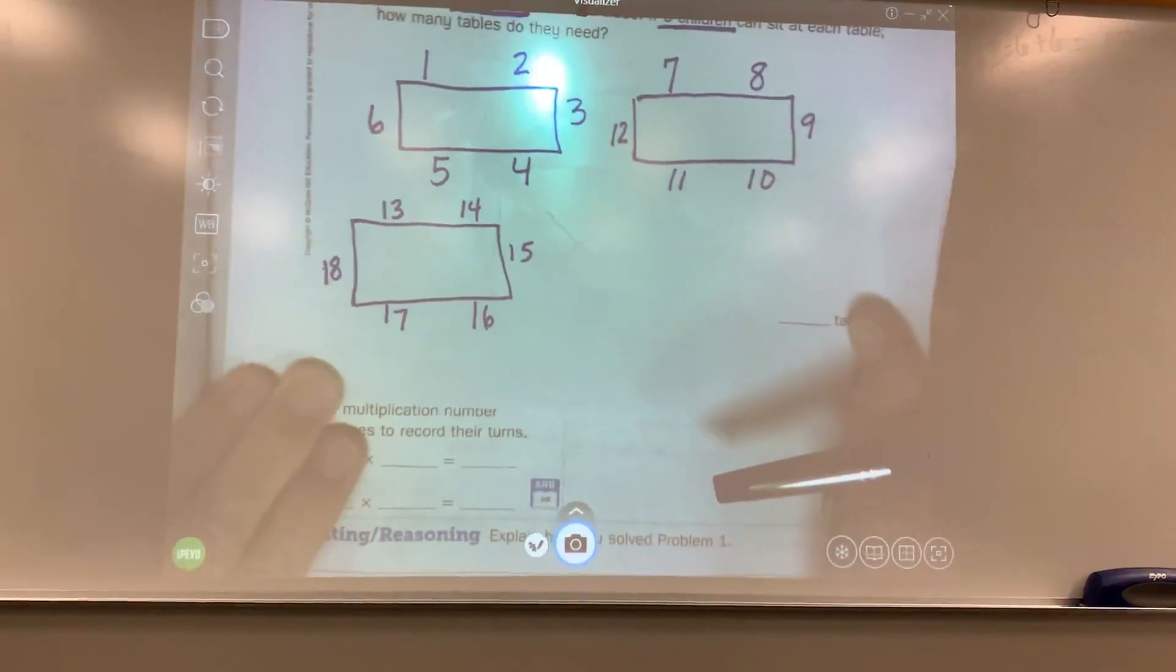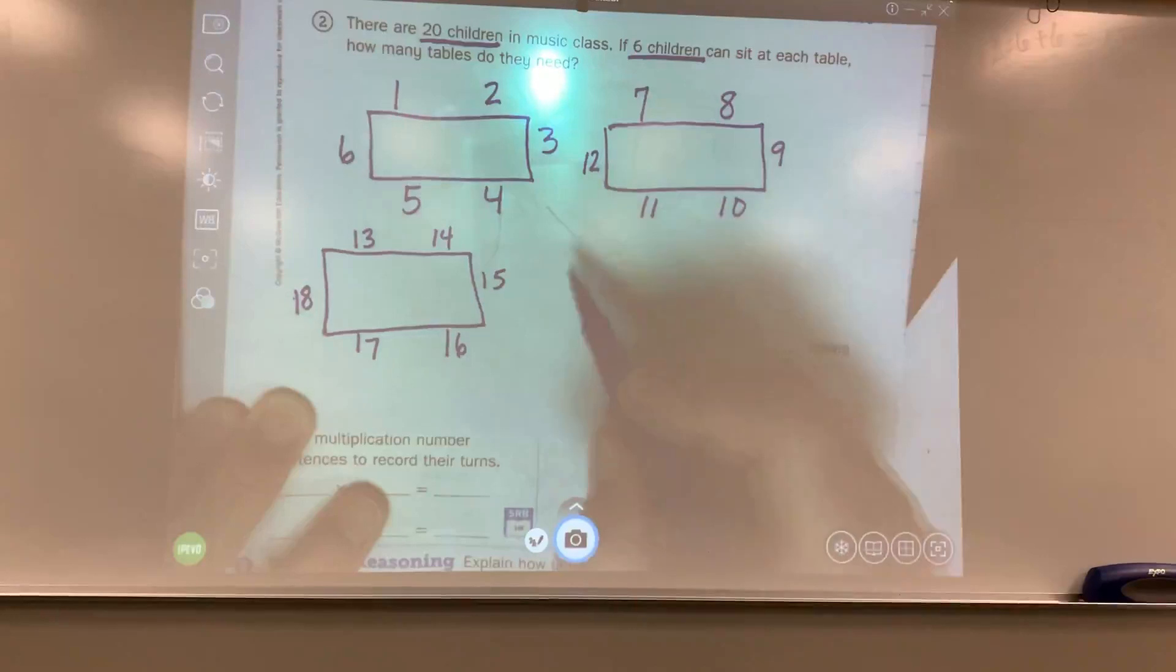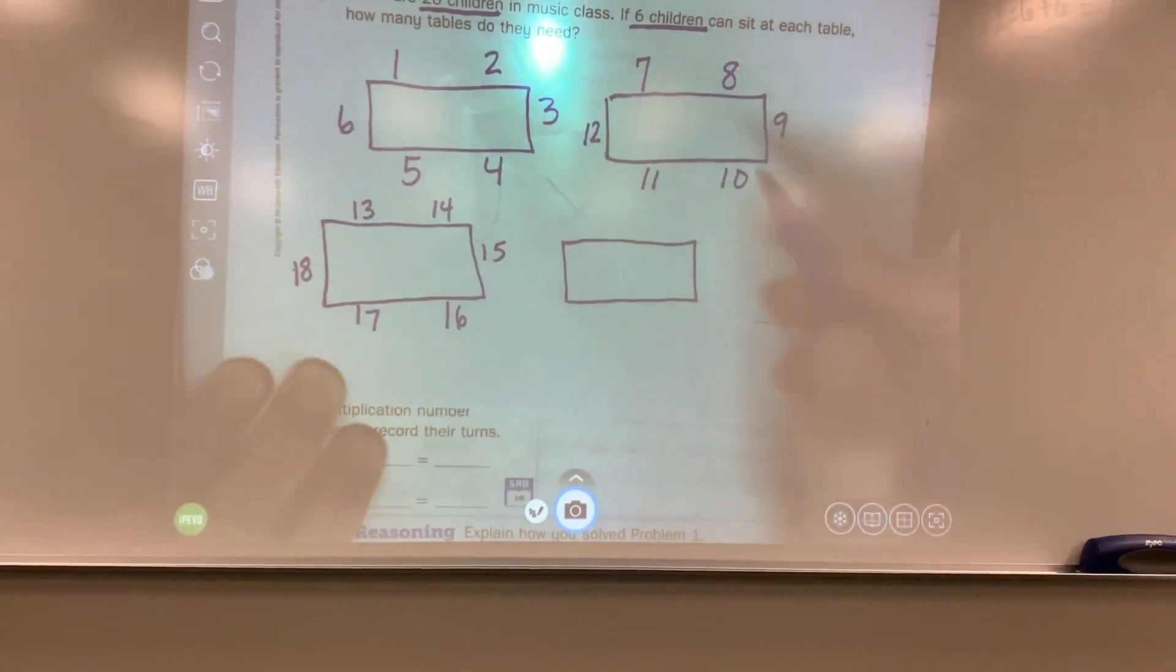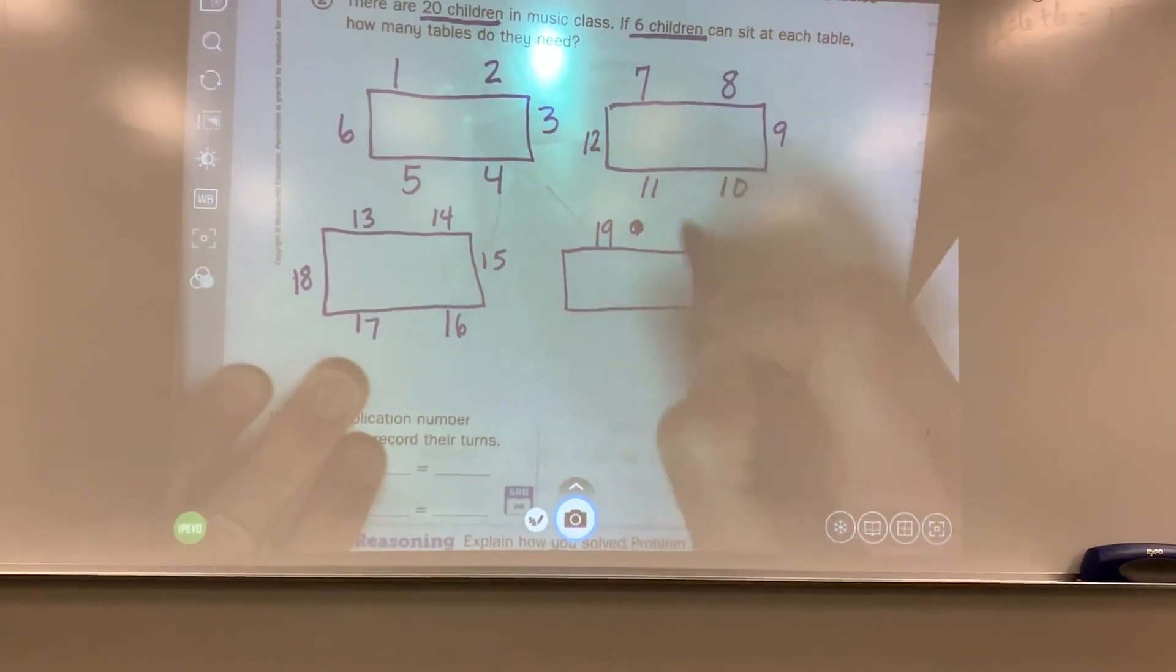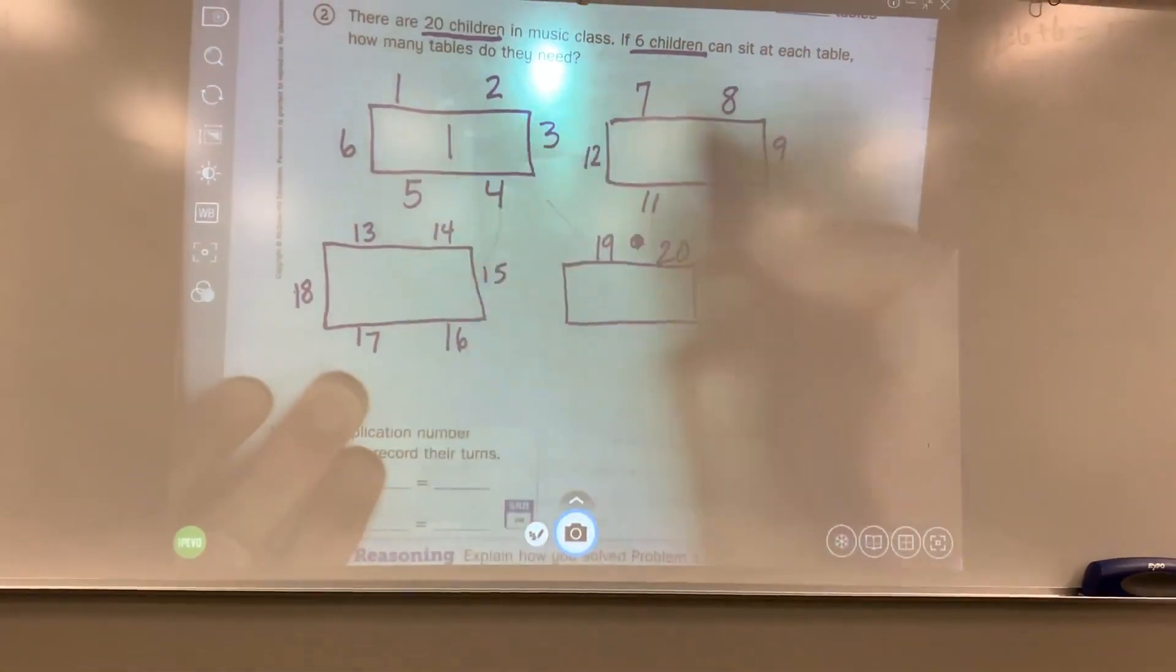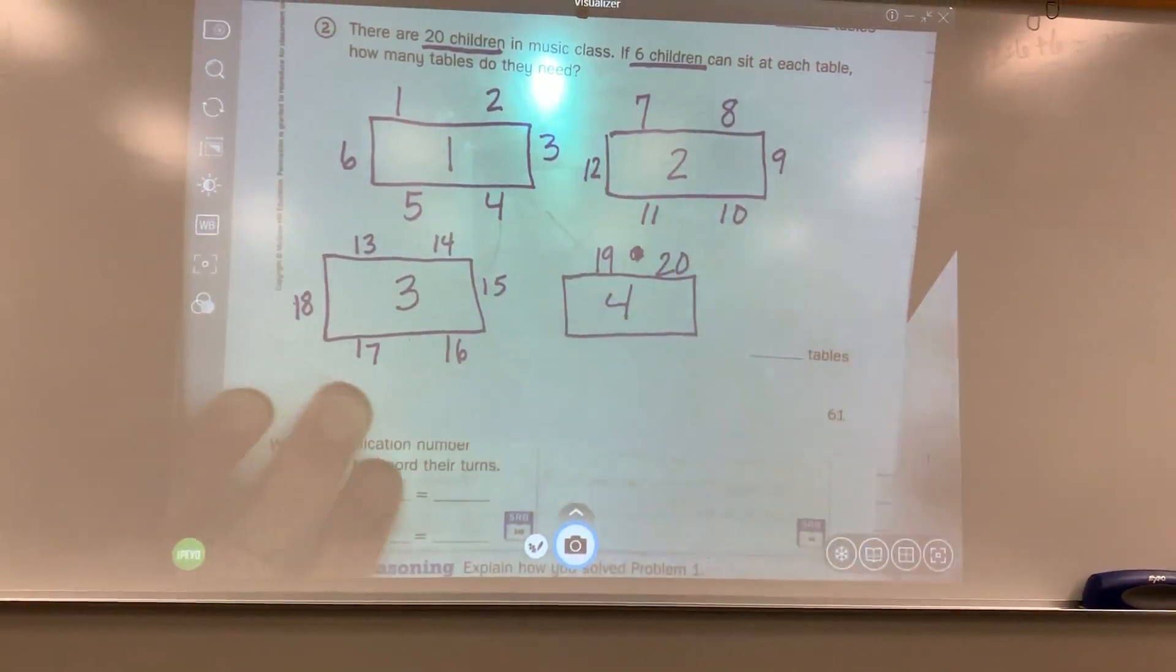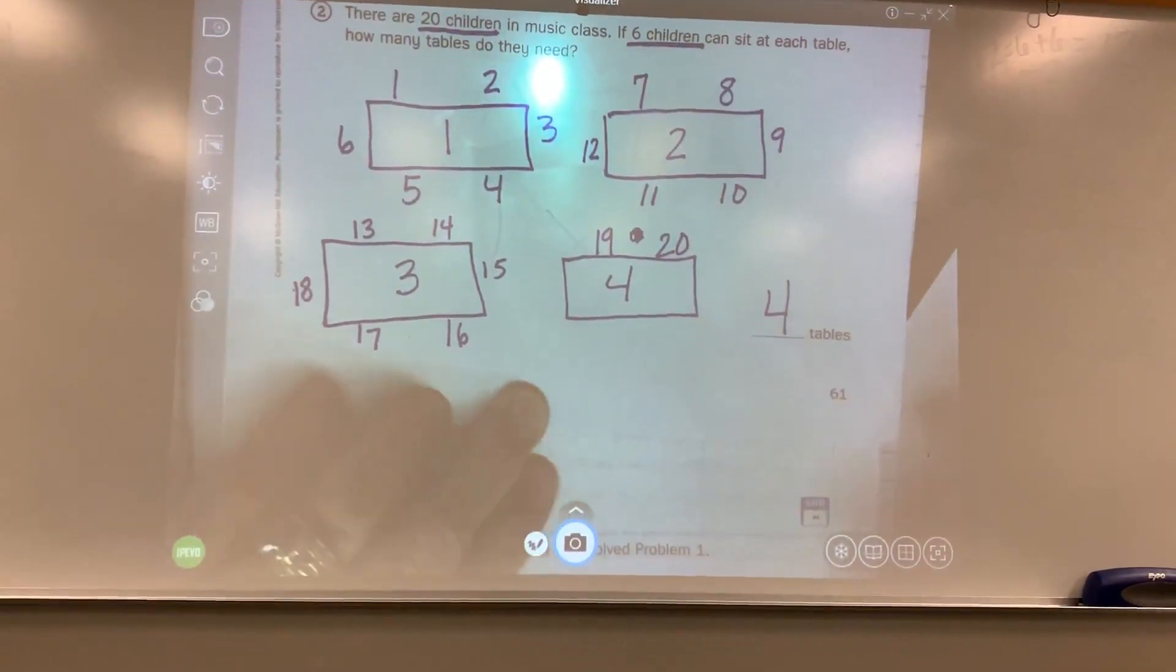Well, I only have 18 kids seated. And remember, I need 20 children to be seated at a table. So although this table is not going to be full, I still need this table for these two kids. So I have 19 and 20. So how many tables do I need? One, two, three, four. I have lots of extra space at this table, but I still need my four tables.